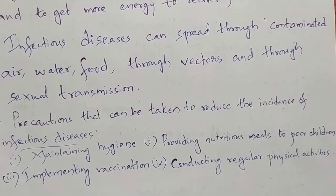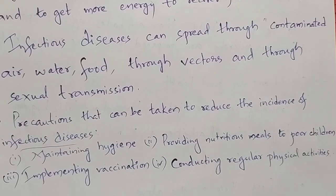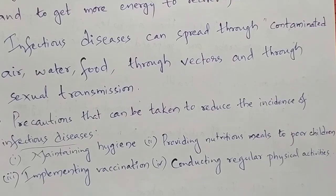What are the different means by which infectious diseases are spread? Infectious diseases can spread through contaminated water, contaminated air, contaminated food, through vectors like insects — mosquitoes, cockroaches, houseflies — and through sexual transmission. So these are the various means of spread of diseases.